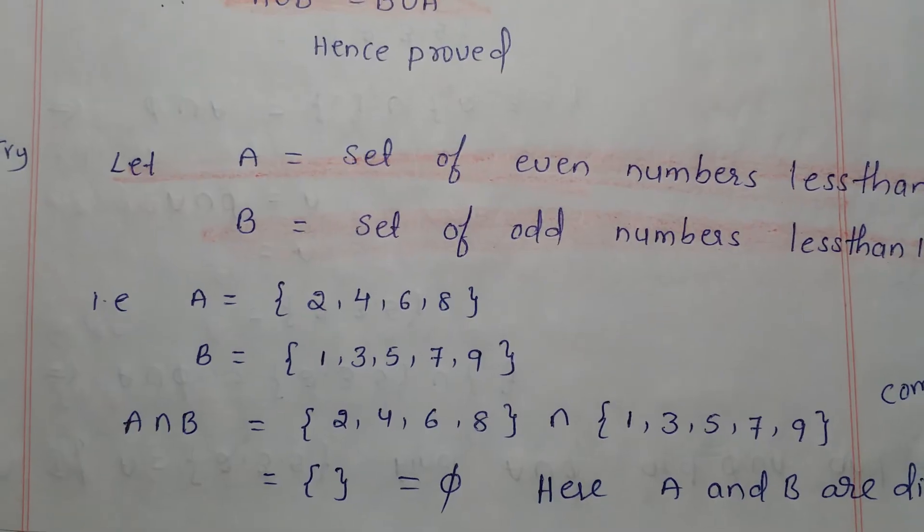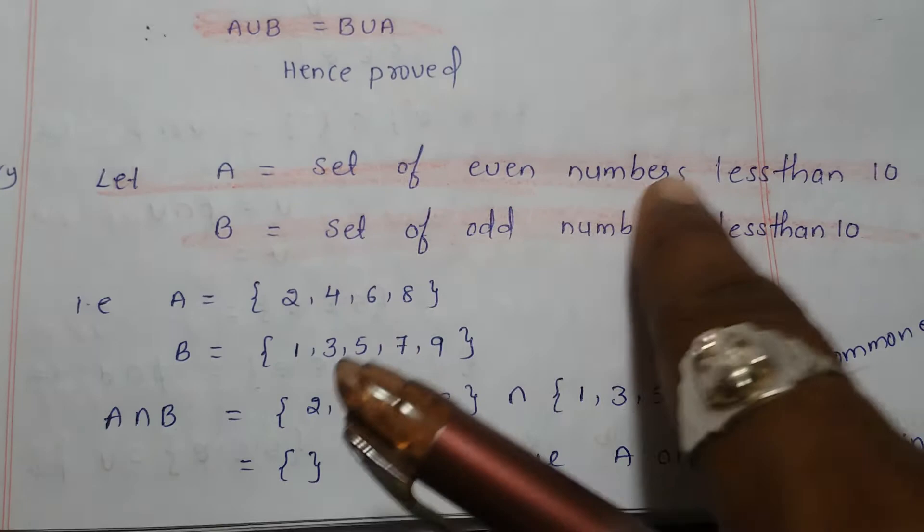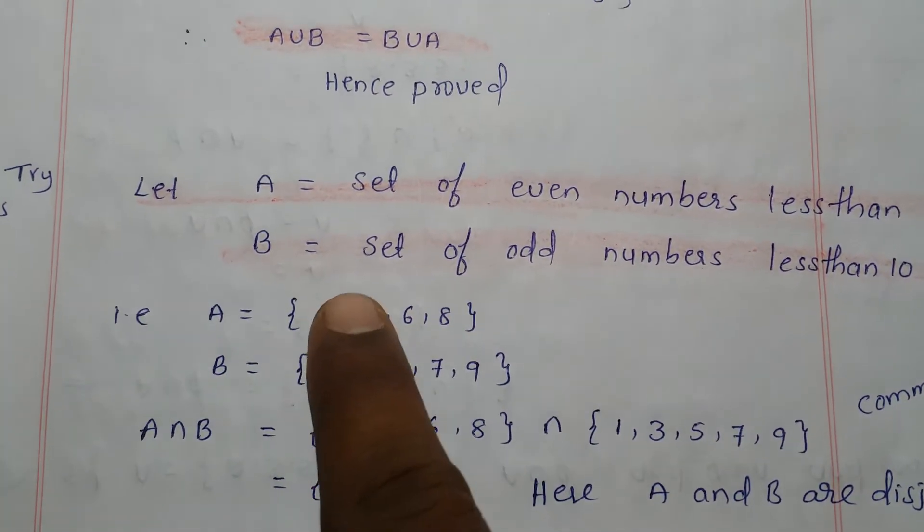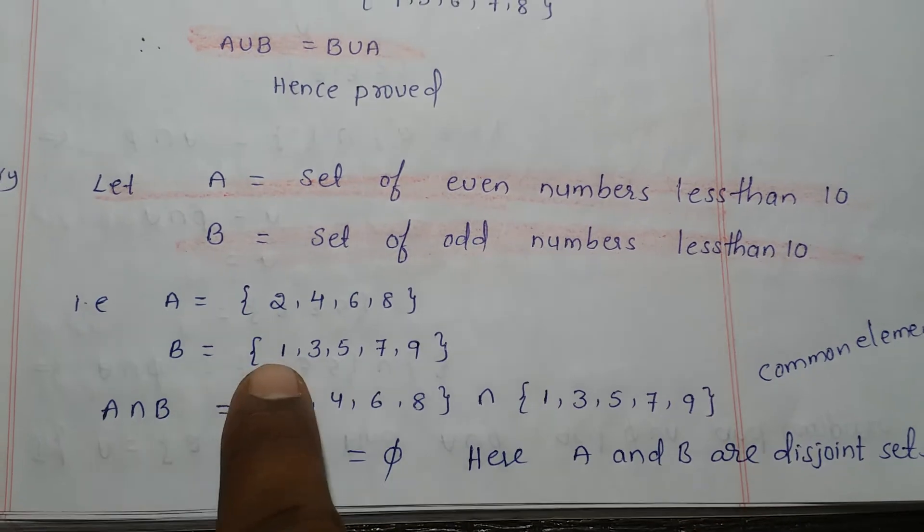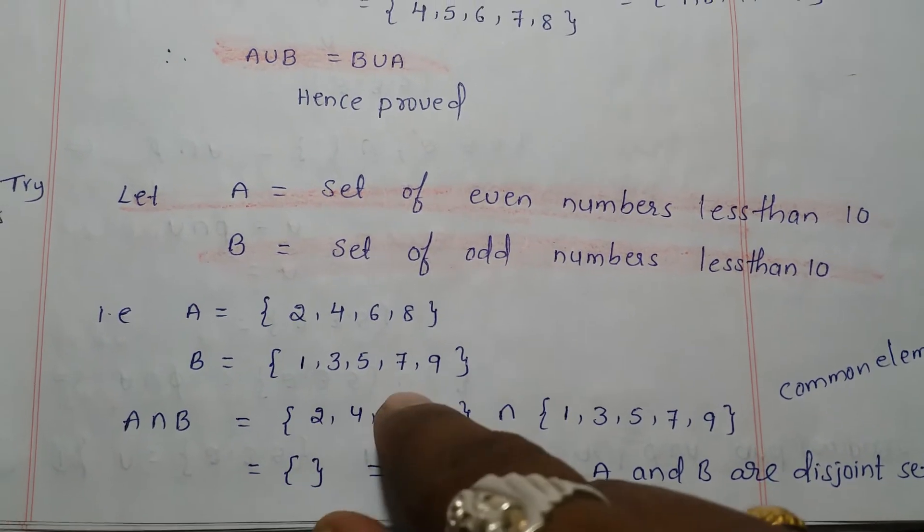So A is the set of even numbers less than 10, which is 2, 4, 6, 8. B is the set of odd numbers less than 10, which is 1, 3, 5, 7, 9.